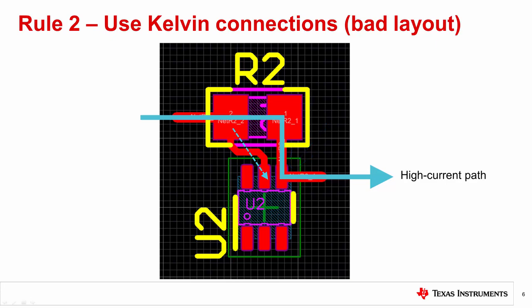The current flowing through the left trace is minimal, usually around tens of microamps, but the high current path through the right trace can carry tens of amps. This means that the trace resistance will create a much larger error voltage than in the previous case,